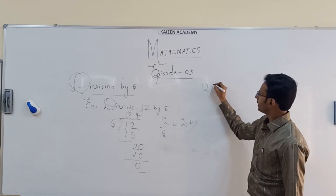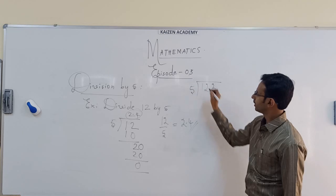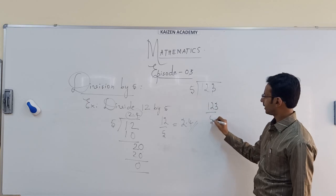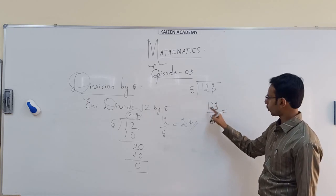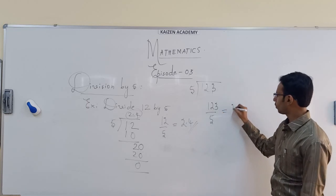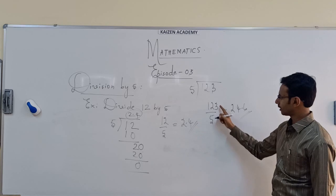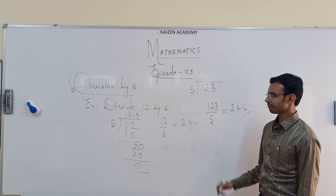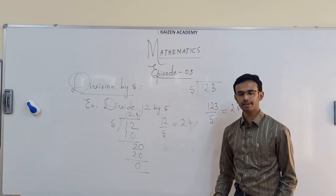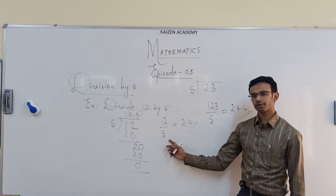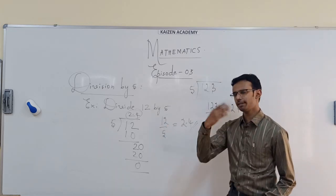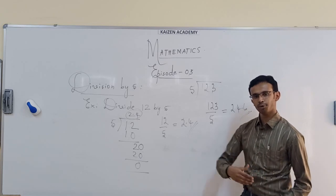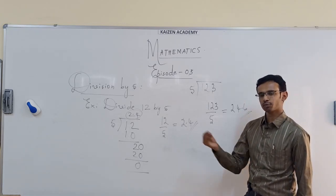Let me take one more example: 123 divided by 5. Without normal division, just double the numerator — 123 plus 123 is 246 — put a decimal point before the last digit, giving 24.6. Don't you think this makes calculations much faster? You may not have known about this before. Now your curiosity will start — is there a shortcut for dividing by 2, by 3, by other numbers? We do have many more shortcuts, and as we go further we will be sharing them with you.